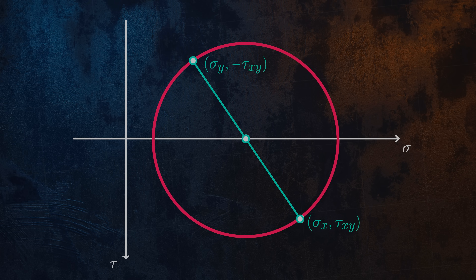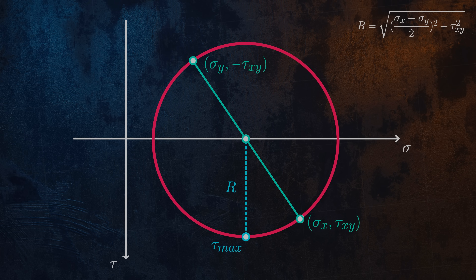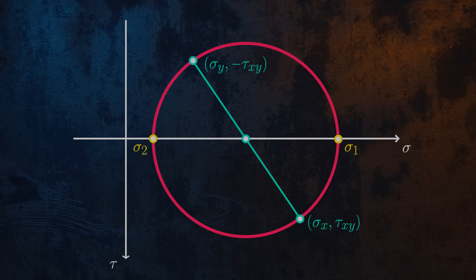Each point on the circle represents the normal and shear stresses for a certain orientation of our stress element. We can use Mohr's circle to work out some interesting information. We can see visually that the maximum shear stress is equal to the radius of the circle, which we can easily determine either approximately by measuring the distance on paper, or exactly by using the equation for the radius of a circle. We can also determine the principal stresses by looking at where the circle crosses the horizontal axis, as the shear stress is zero at these locations. The principal stresses can be calculated by taking the x-coordinate of the center of the circle and adding or subtracting the circle radius.